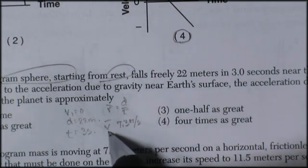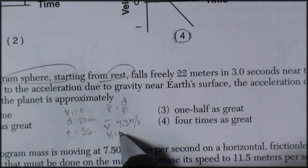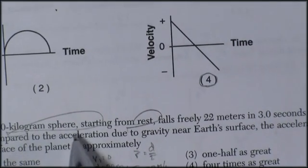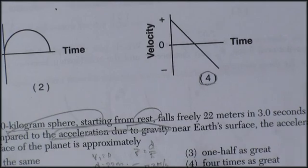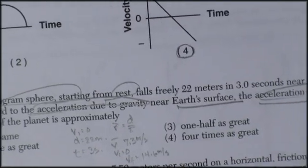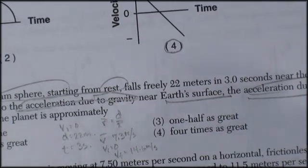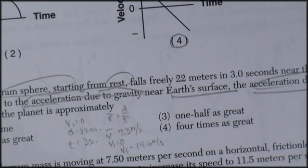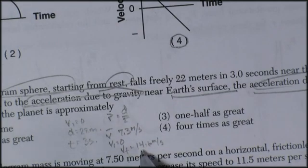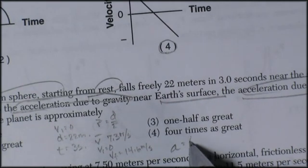And if my initial velocity was zero, then my velocity final is going to be 14.6 meters per second. Alright, so let's read. Compared to the acceleration due to gravity near the Earth's surface, the acceleration due to gravity near the surface of this planet. So somehow we're on another planet. So we want to know what the acceleration due to gravity on this planet is. Well, we had an initial velocity of zero. Average is 7.3, meaning a final velocity of twice that, 14.6. So it went from zero to 14.6 in three seconds.